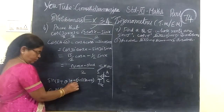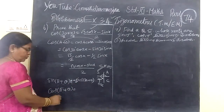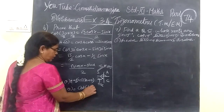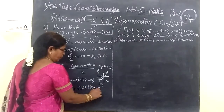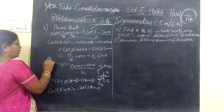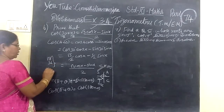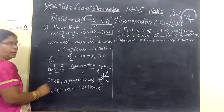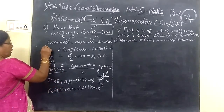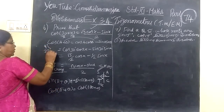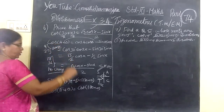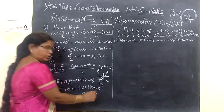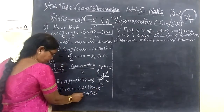That is why the minus sign is placed. Now cos of 180 plus θ — cos of 180 plus θ. There is no change in the ratio, so cos remains cos. Therefore cos(180 plus θ) equals minus cos θ.